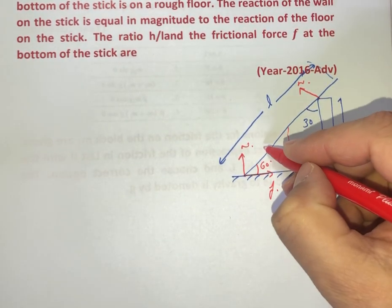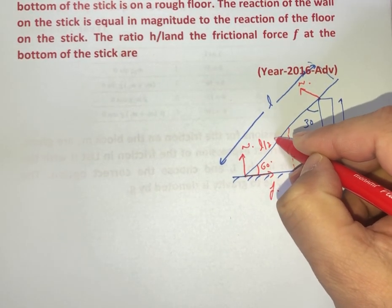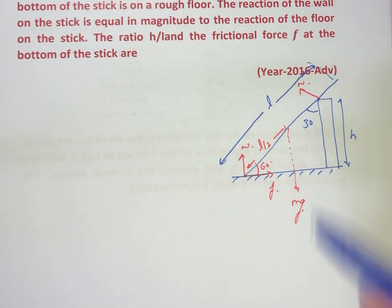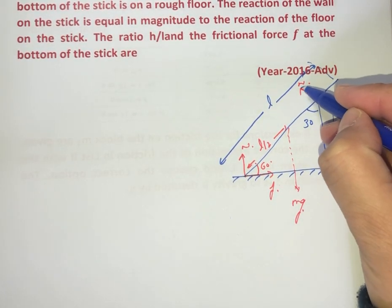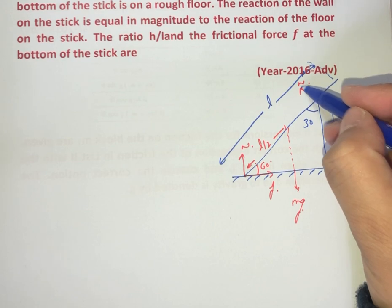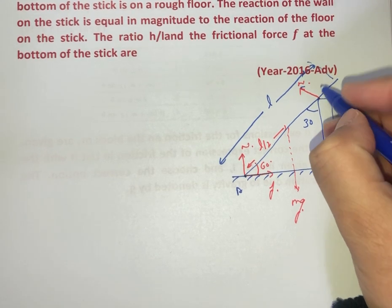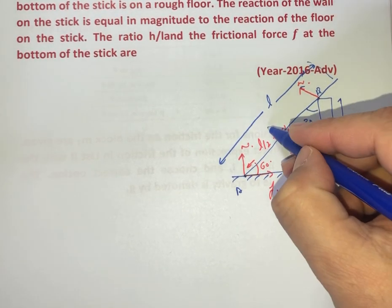And this mg will be at L by 2 from here. And we assume that the distance between this normal and the bottom of the stick at point A is x.